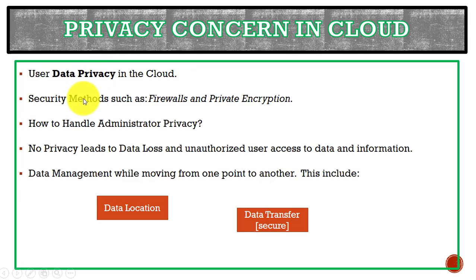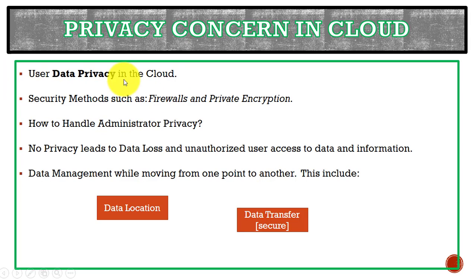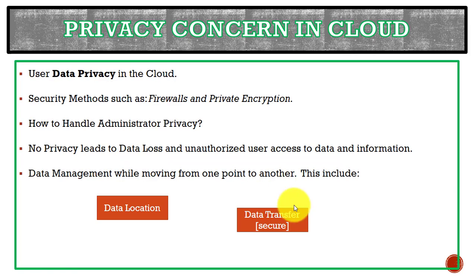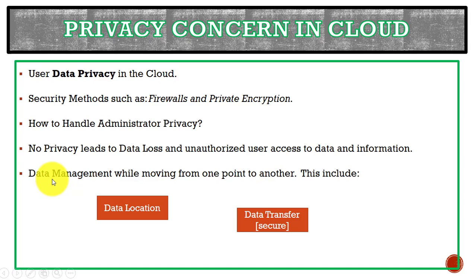Next we have privacy concerns on the cloud, like user data privacy, for which we have different security methods like private encryption and firewalls. We also deal with how to handle administrator privacy. If there is no security, there is unauthorized access to data, information and data leakage, data loss, and data theft — so that is the privacy concern in cloud computing.